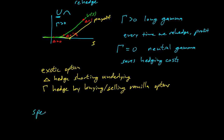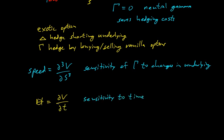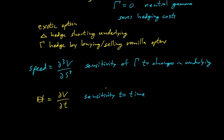Speed is the third derivative of V with respect to S — the sensitivity of gamma to changes in the underlying. It's the highest order derivative commonly used. Theta is the change with respect to T — the sensitivity of the option price to time. For a call option this is generally negative: you're losing value over time. For other types of options it could be positive or negative.